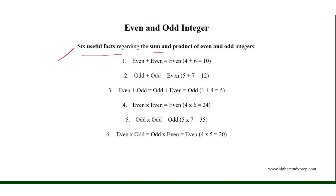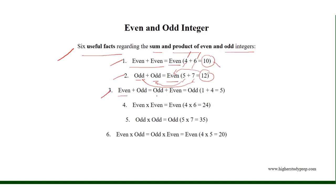Useful facts regarding the sum and product of even and odd integers. The addition of two even integers results in an even integer — for example, 4 plus 6 equals 10. The sum of two odd integers also results in an even integer — for example, 5 plus 7 equals 12. The sum of an even integer and an odd integer results in an odd integer — for example, 1 plus 4 equals 5.